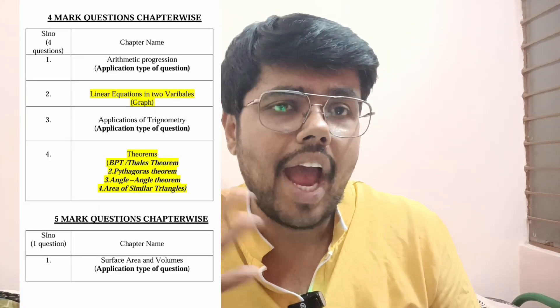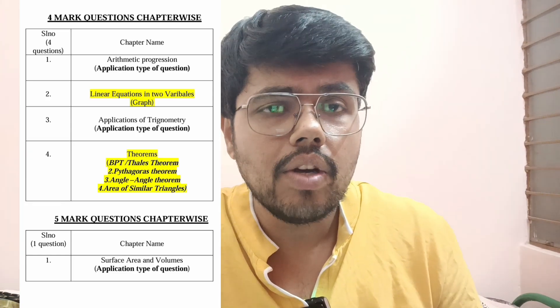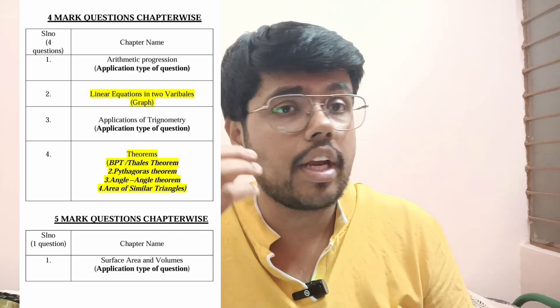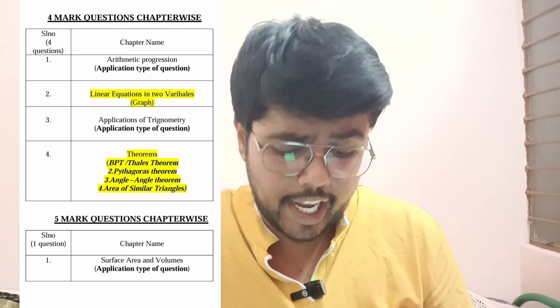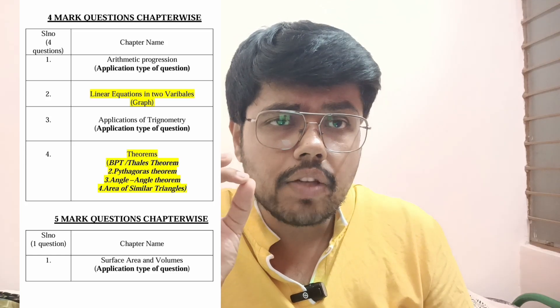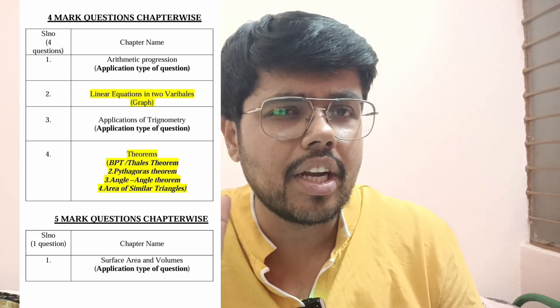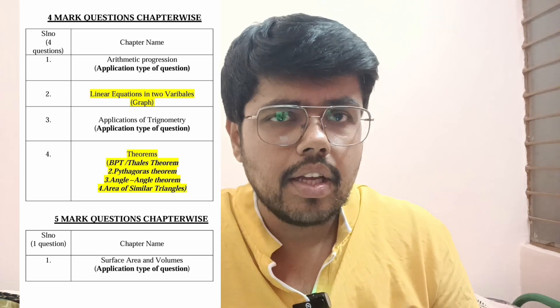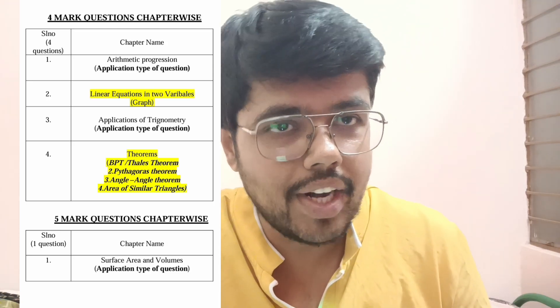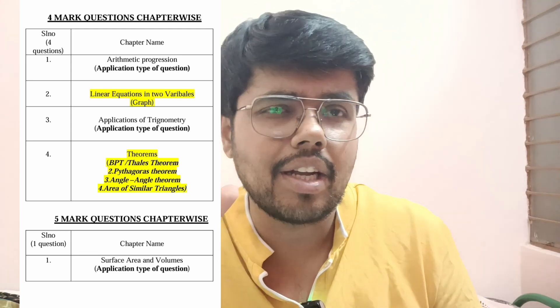Coming to four-mark questions: two questions are very simple — graph and theorem. For theorem, no compromise. You should know all four theorems: BPT, Pythagoras, Angle-Angle, and Areas of Similar Triangles. There can be anything from these four. One change you can expect in three marks: quadratic equation verbal can go to four marks sometime, and AP can come to three marks. But I feel this time it won't change. In four markers: graph is confirmed, theorem is confirmed. Next two are Applications of Trigonometry — very simple — and AP. Watch my 30-minute video on applications of trigonometry.